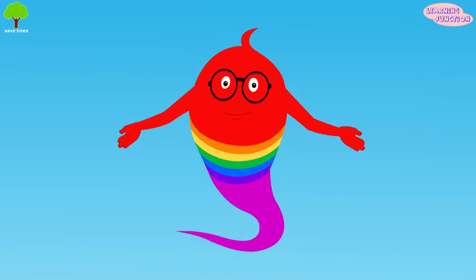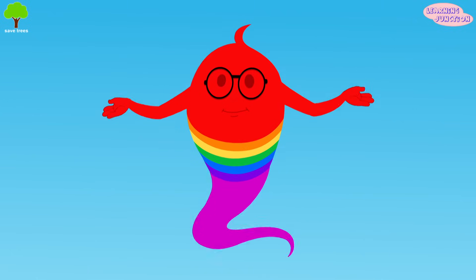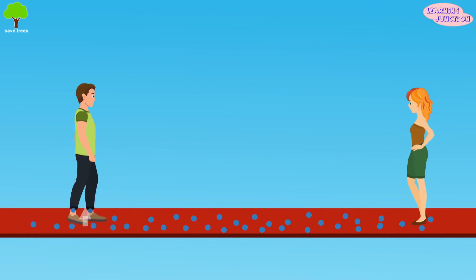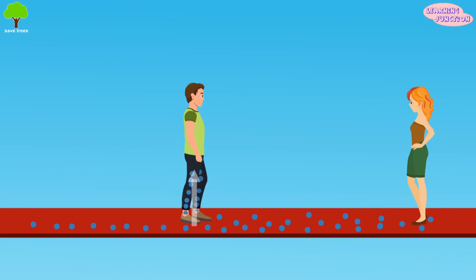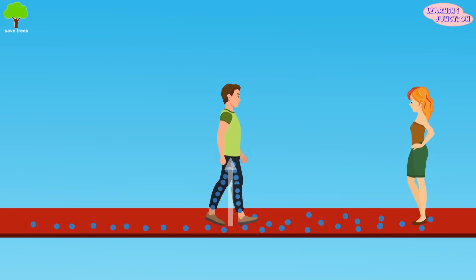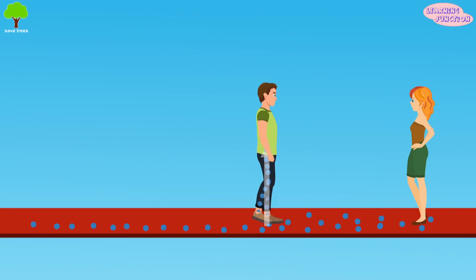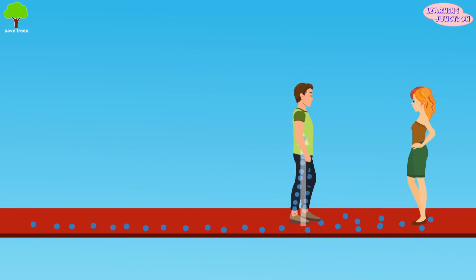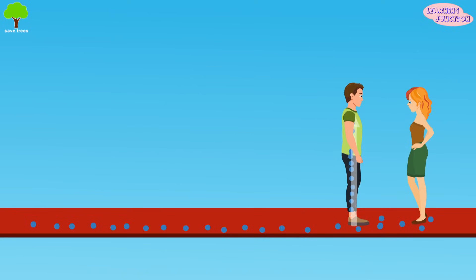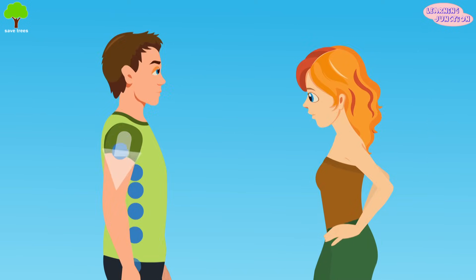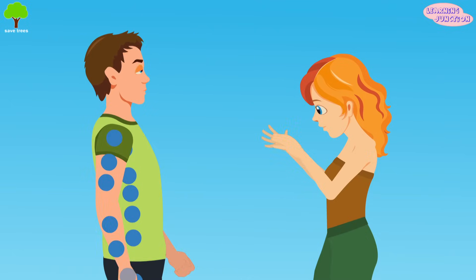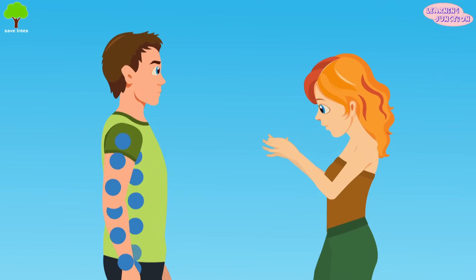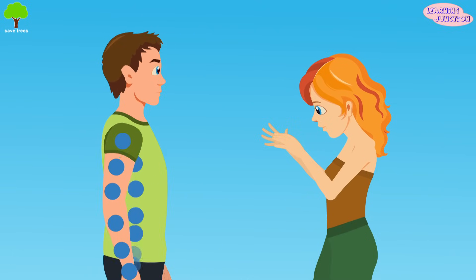Let's understand this with a simple experiment. See this man walking on the carpet? This carpet is covered with many electrons. As he walks, he picks up the static electricity. When they shake hands, the electricity discharges through the lady, giving her a sudden shock.